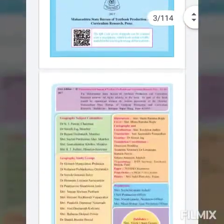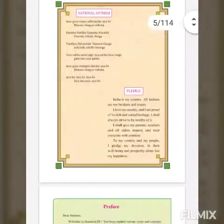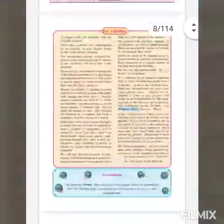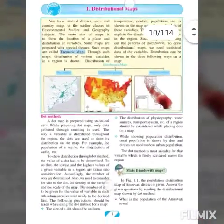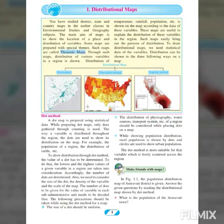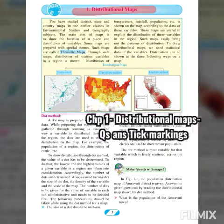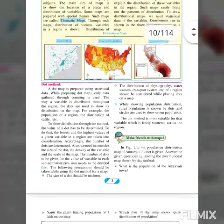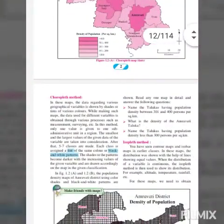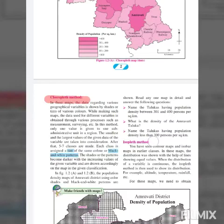Hello students, welcome to Wisdom Corner. Here I am sharing with you Geography 9th Standard, first chapter question answers. The first chapter is named 'Distributional Maps.' I will be explaining the answers in this video, and will be giving you question answers for this chapter. The questions are at the end of the chapter in this textbook.